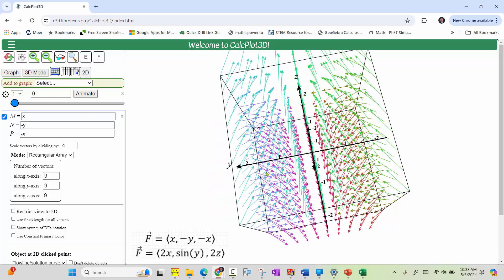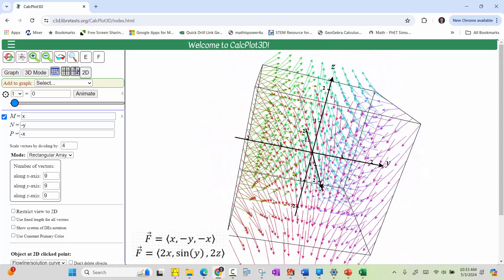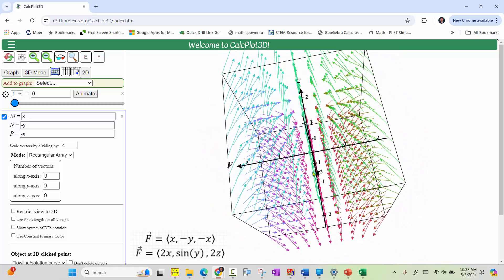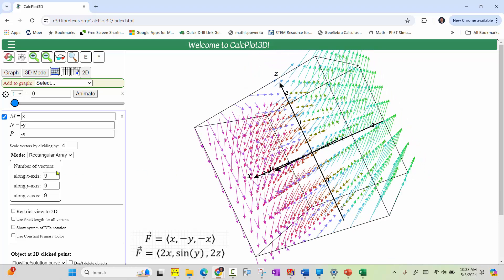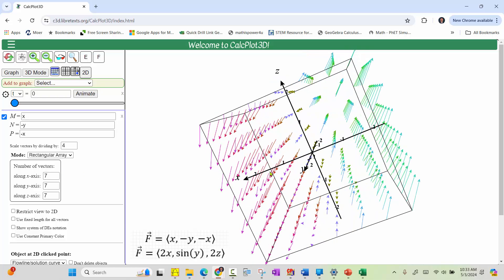If we think there are too many vectors in the vector field, we can change the number of vectors along the axes. Let's change the nines to sevens. And maybe this looks a little bit better.